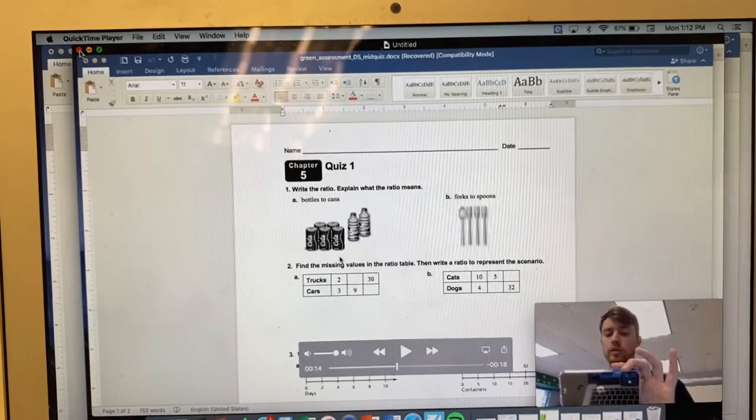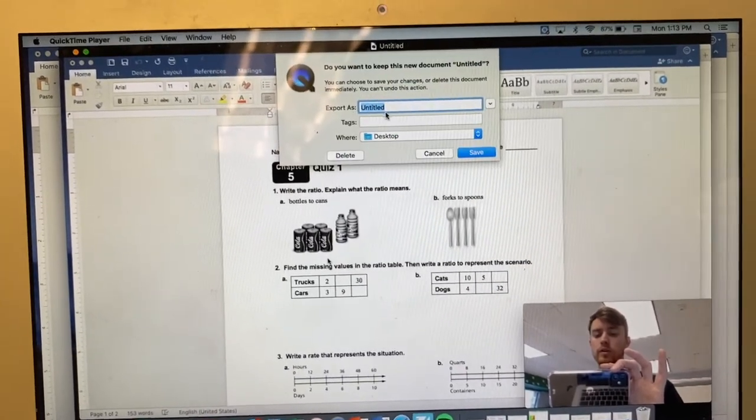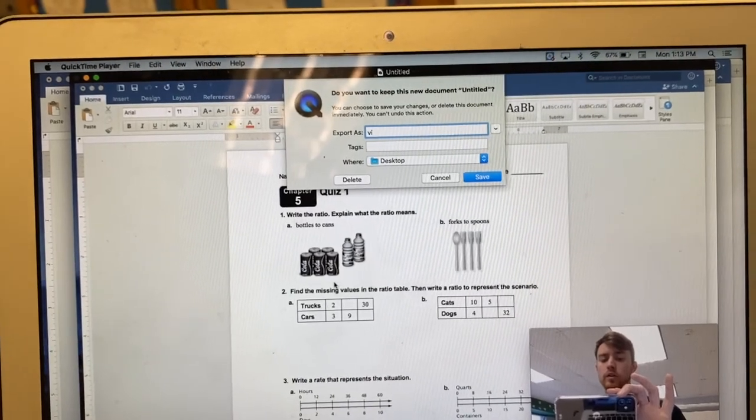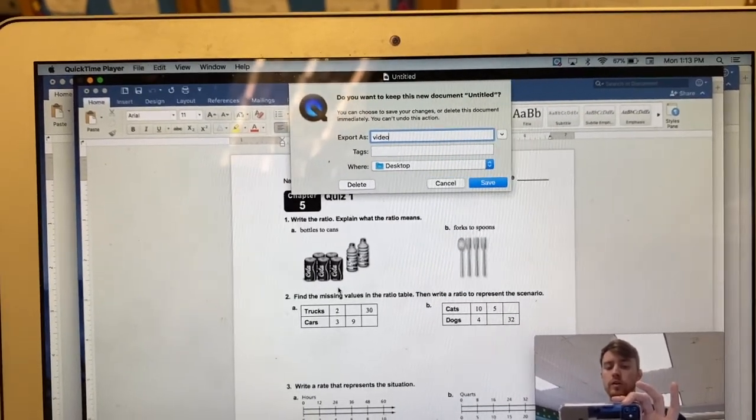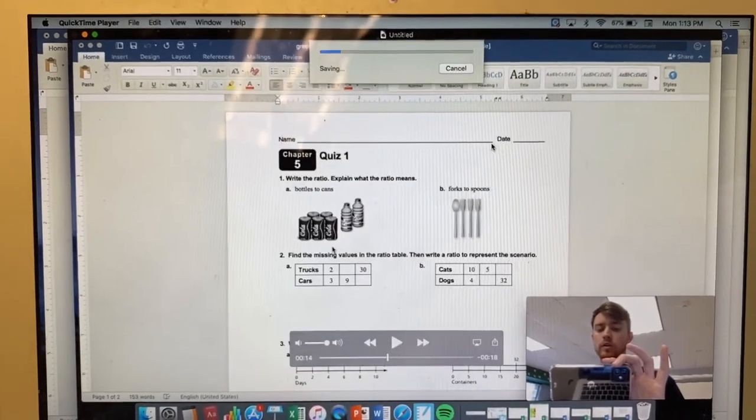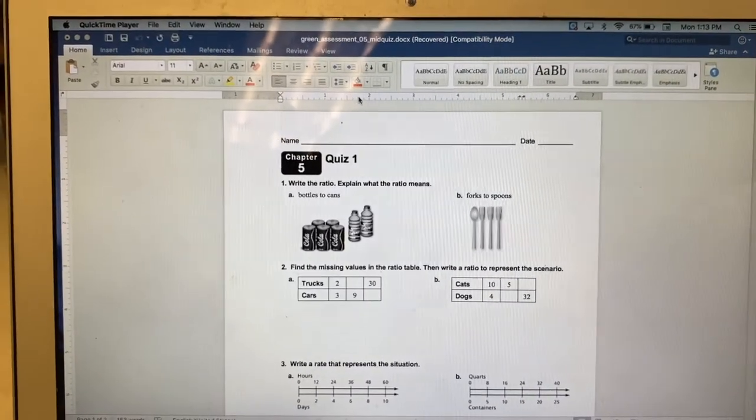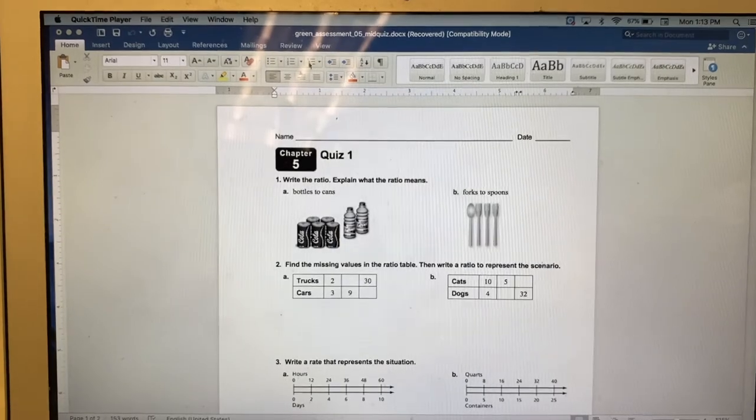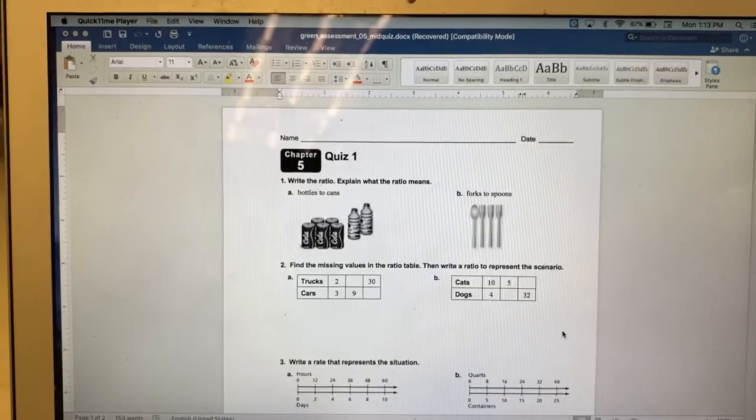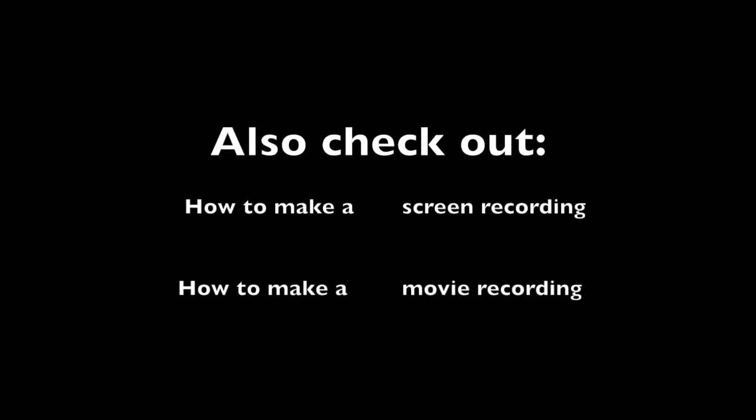you can hit the X and this will allow you to save. I'm going to save this as video and I want to save it to my desktop, so I'm going to save. Now I have just saved a video where I'm showing my students something on my screen and I'm also recording my image as well. Good luck!